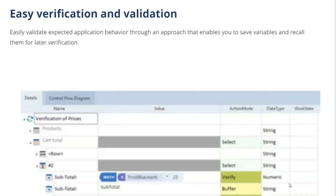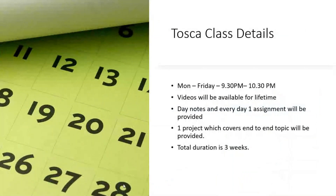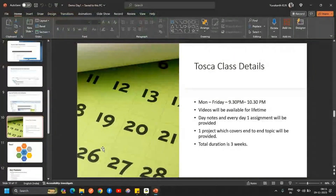Verifying and validating your test case is very simple in Tosca. For example, if you create a subtotal math step and do some addition, you can simply keep the action module to 'Verify' — this one simple thing makes your test step verify everything. That is why it is called easy verification and validation.